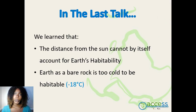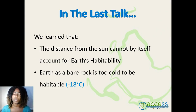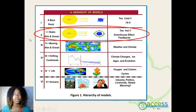In the previous talk we learned that the distance from the sun alone cannot account for the earth's habitability — more is needed. We took the earth as a bare rock to be negative 18 degrees Celsius using a model equation and found out that the earth is way too cold to be habitable. Looking at our hierarchy of models, in this talk we will focus on the second part which adds a static atmosphere to the bare rock we found to be too cold.